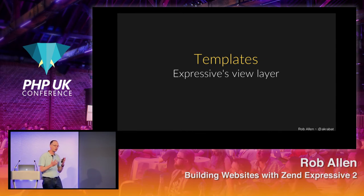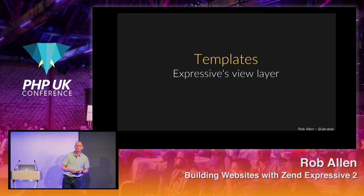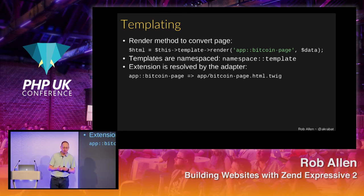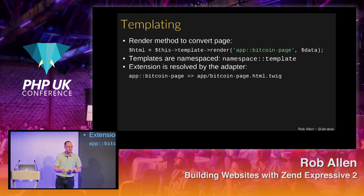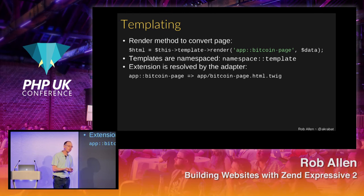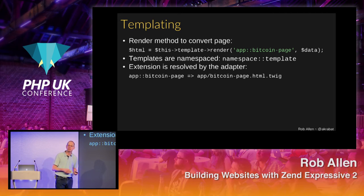We've now got our action done — our service class is injected, we're executing it, hitting the API, and getting the data back. Now we need to display it to the user using templates. We have a render method which takes the template name and the data to pass through to the template. Templates are namespaced with double colons — it tends to match the PHP namespace lowercased and maps to a directory on disk. So app:: maps to the app directory, and then bitcoin-page maps to the file name. The .html.twig extension is provided automatically by Expressive because we chose the Twig renderer.